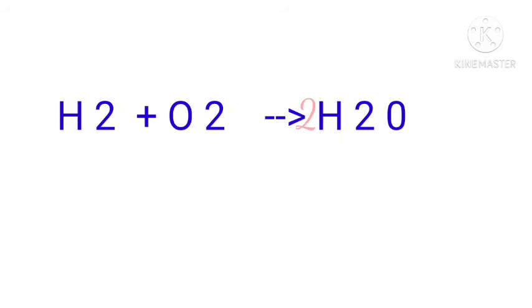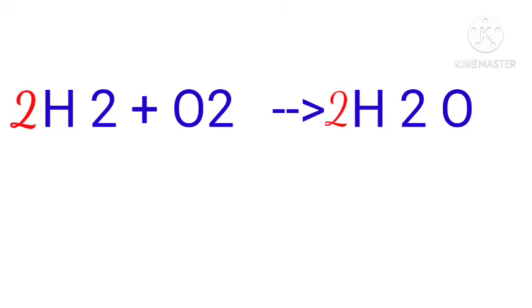However, by doing so the number of hydrogen atoms becomes unbalanced. These can be balanced if we multiply H2 on the left hand side with 2. Thus we will get 2H2 plus O2 gives 2H2O.